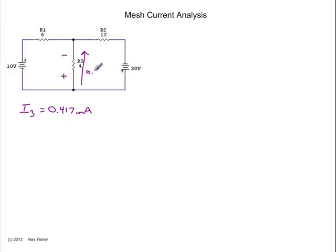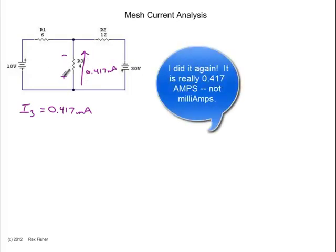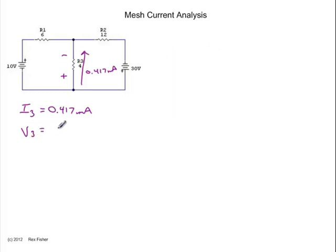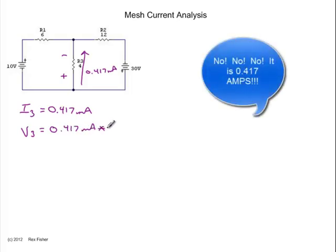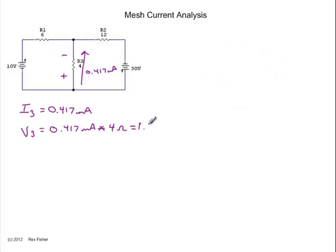So we have 0.417 milliamps flowing up. How many volts drop across R3? Well, V3 is going to be equal to the current I3, which is 0.417 milliamps, times the value of R3, which is 4 ohms. And if we multiply those together, we get 1.667 volts.